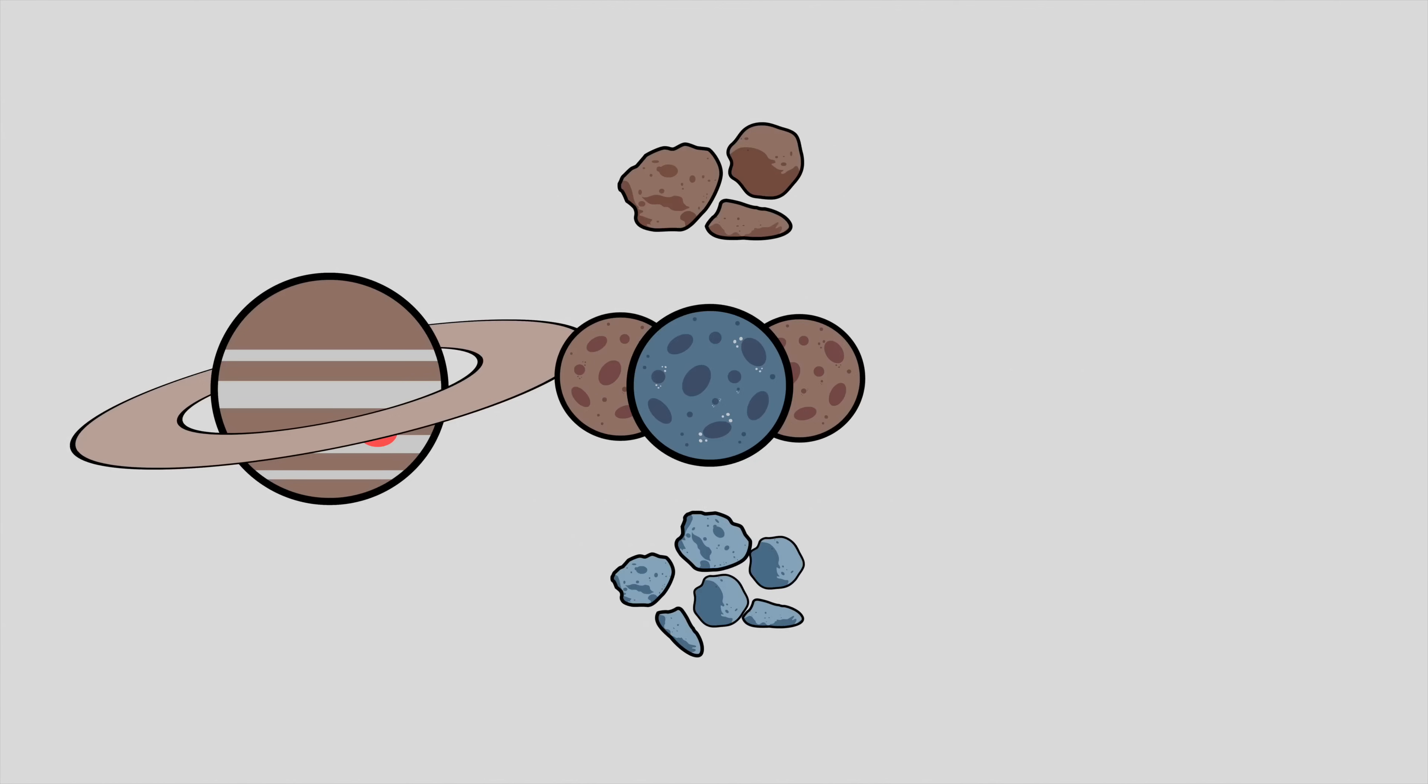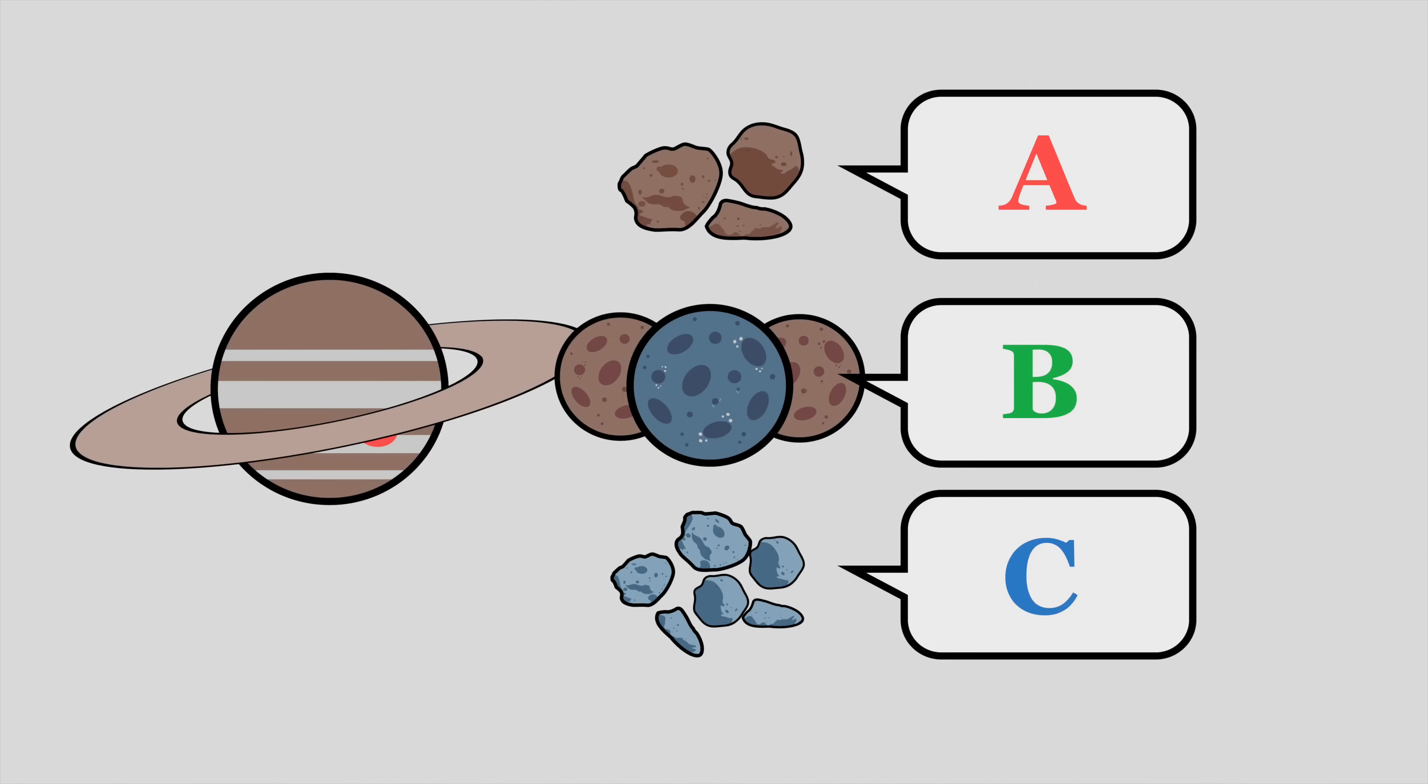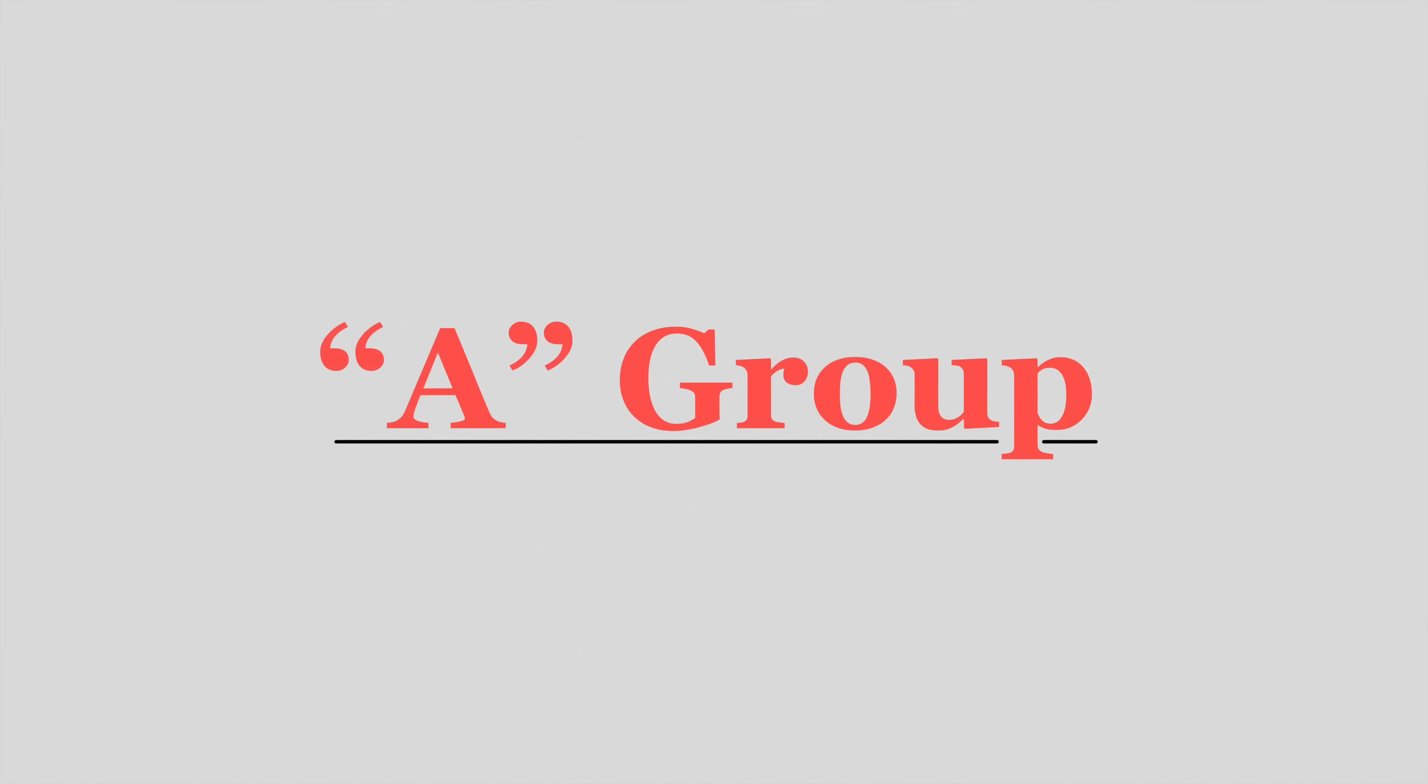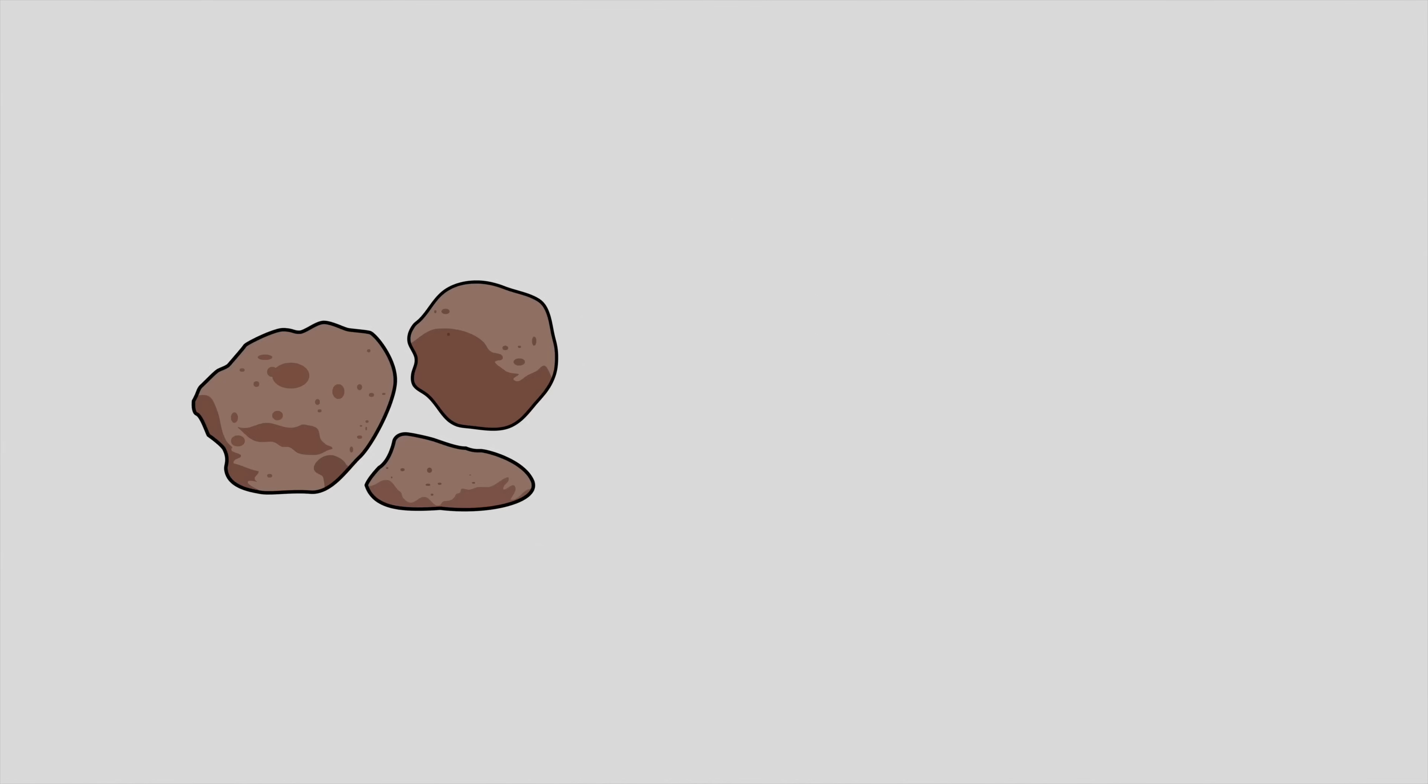Now, gas giants will normally have up to three distinct groups of satellites, A, B and C. The first group of moons, the A group, are a close-in cluster of irregularly shaped minor moons, who all share the following characteristics.